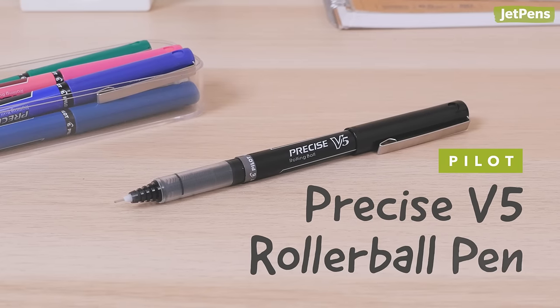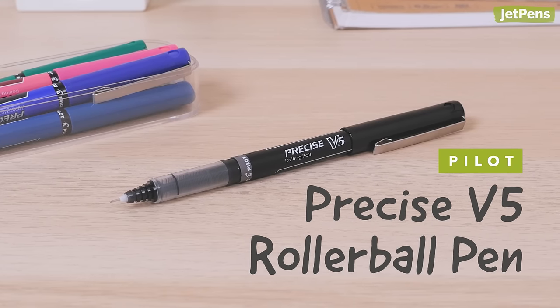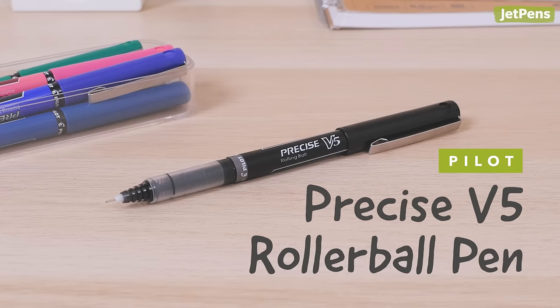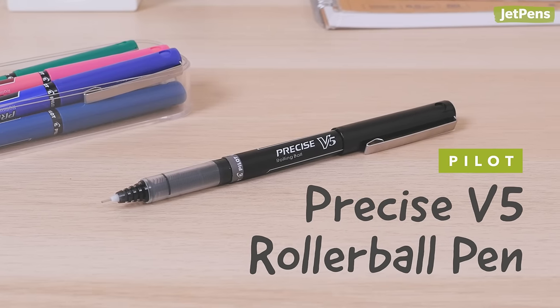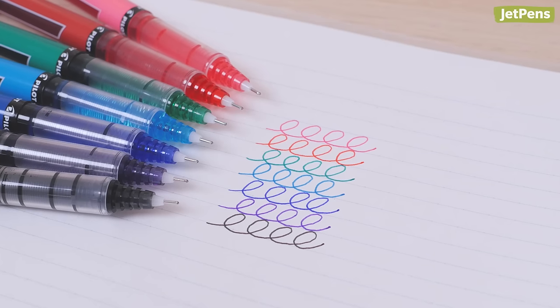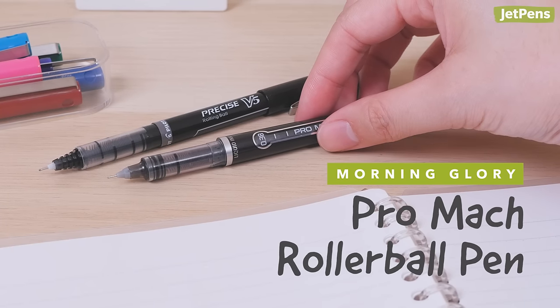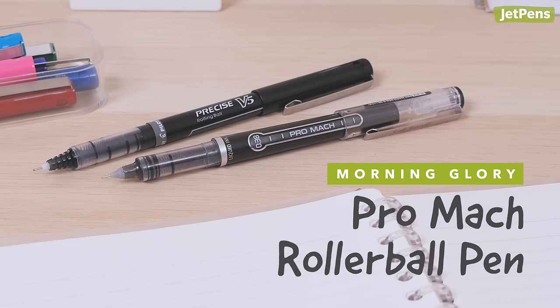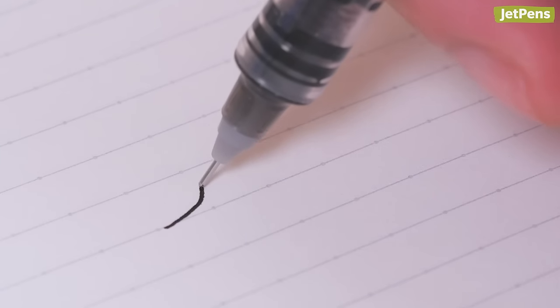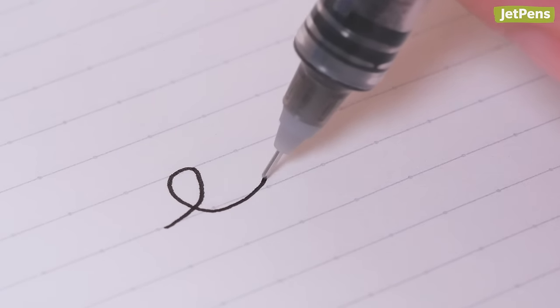A favorite among rollerball enthusiasts, the Pilot Precise V5 delivers a smooth and skip-free writing experience in a range of fun and practical colors. If you have small handwriting, we recommend Morning Glory's Pro Mock Rollerball. It comes in an impressive 0.38mm tip size.